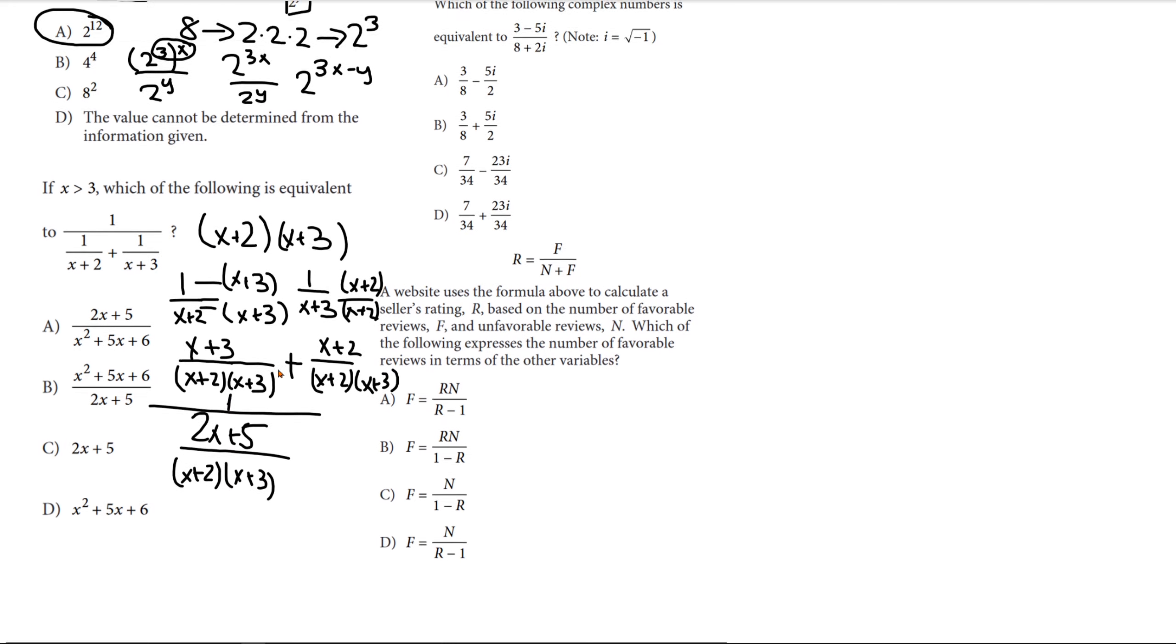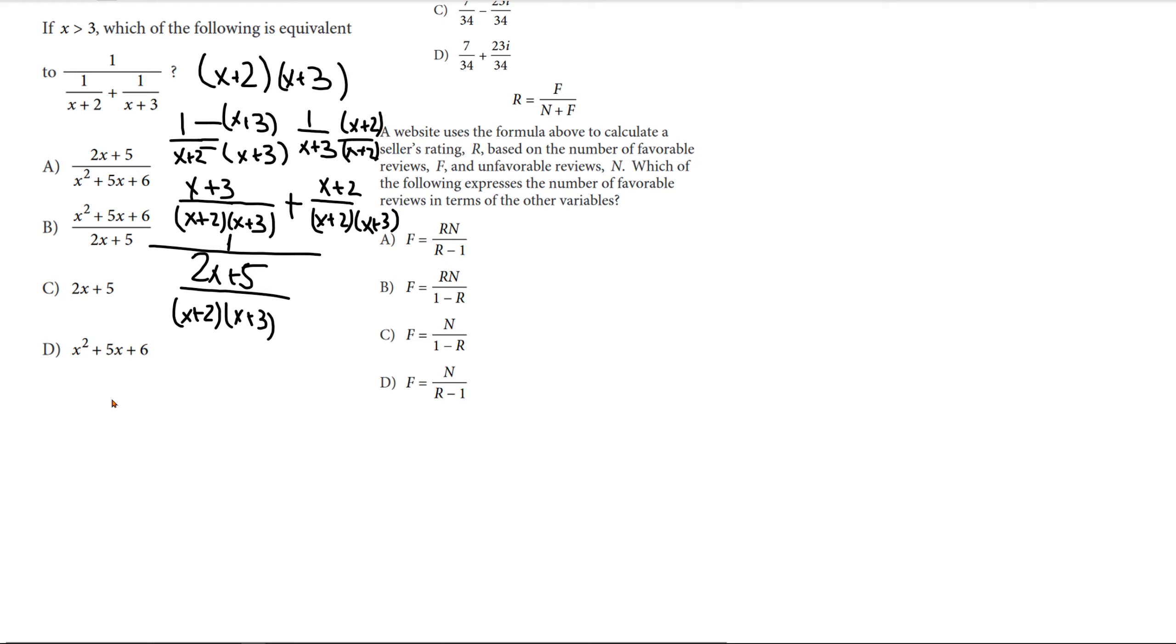Okay. So now, when we divide by a fraction like this, we just multiply by the reciprocal. So, we have 1 over 1 because that's the numerator. And we have 2x plus 5 on the bottom because if we flip the bottom fraction, 2x plus 5 will be on the bottom and x plus 2 times x plus 3 will be on top.